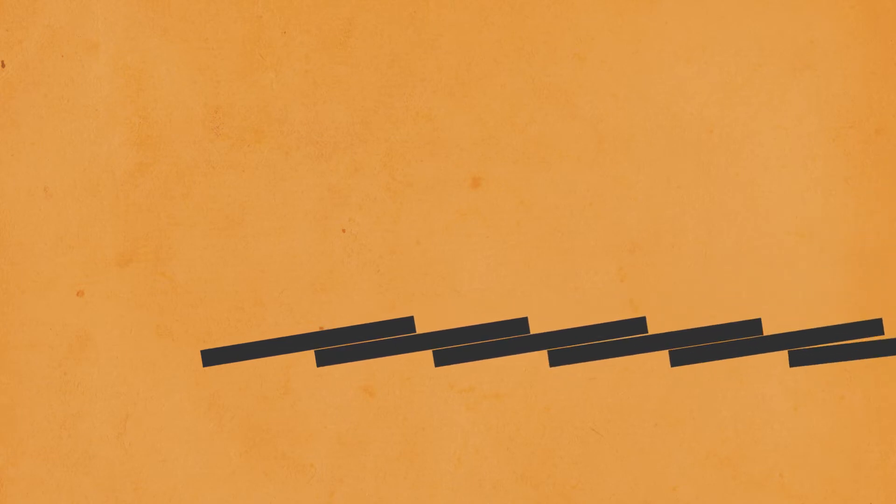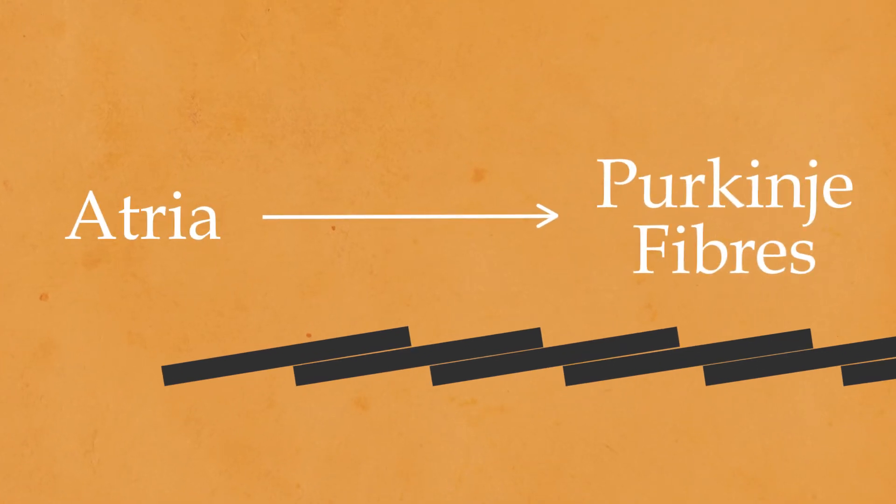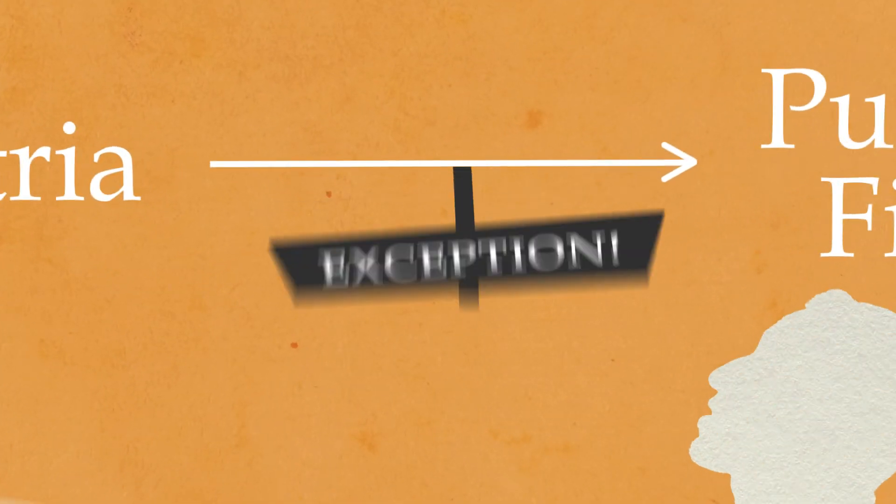So picture a row of dominoes waiting to be set in motion. This motion can only go one way, like how depolarization spreads in one direction, from atria to the Purkinje fibers. Okay, that's interesting. But there is an exception.